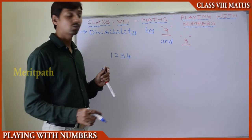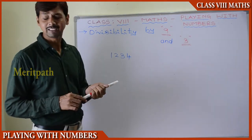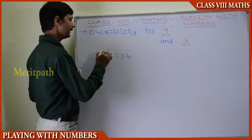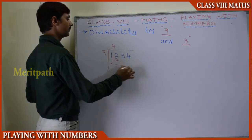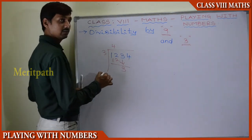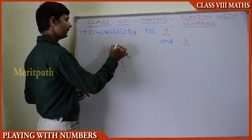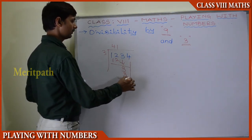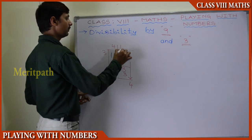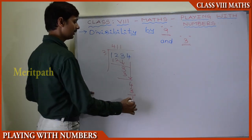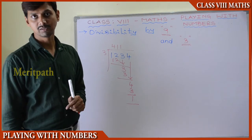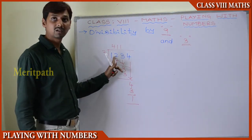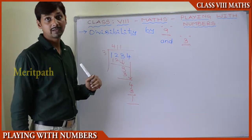Now let us take 1,024 and check if it is divisible by 3 or not. Dividing: 3 goes 4 times into 12, then bringing down gives us 0, then 4 — 3 goes 1 time giving 3, and we get remainder 1. So 1,024 is not divisible by 3.